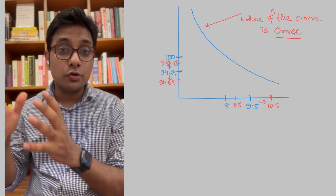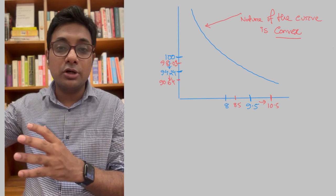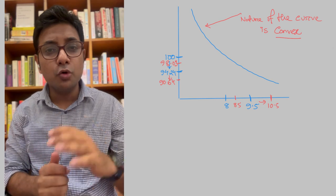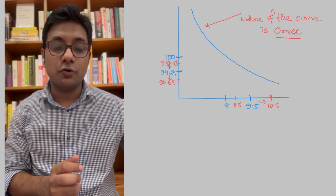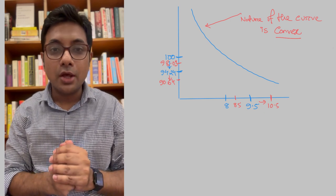That means, this coupon rate is the same. Interest rate is the same. Similarly, low coupon bond is the same. That means, low coupon bond has higher interest rate risk. Next, we have the maturity.